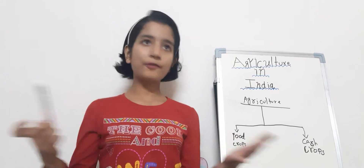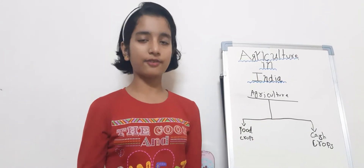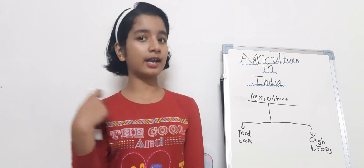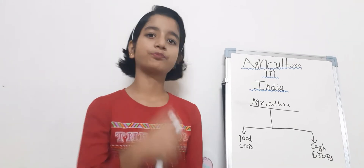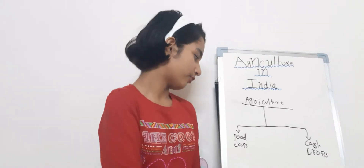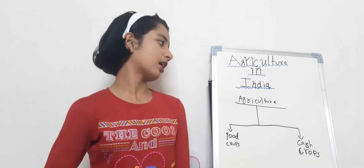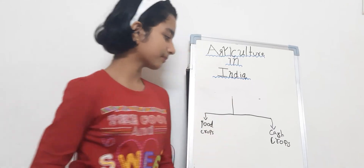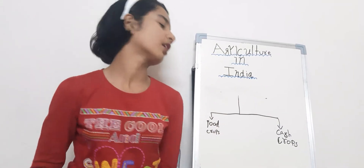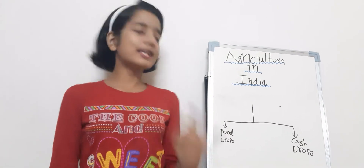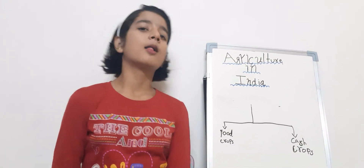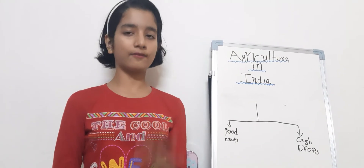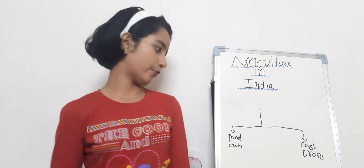So half of the people here practice agriculture for a living. So now let's think: what are the types of crops? Those are food crops and cash crops. So let's see what are food crops. The crops that are grown for consumption as food and are used by the farmer are known as food crops.